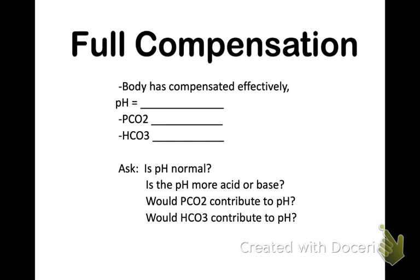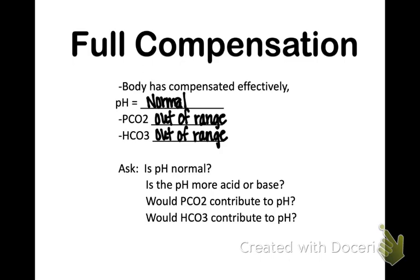For fully compensated: your body has compensated effectively — either respiratory has done its job or the kidneys have. Your pH is normal, but your pCO2 will be out of range and your HCO3 will also be out of range. You need to ask yourself: is the pH more acidic or more basic, and would the pCO2 contribute to that pH, or would your bicarb contribute to it?